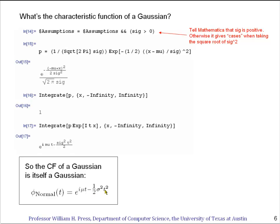So you see the characteristic function basically takes the standard deviation that was in the denominator, or I should say the variance, the square of the standard deviation, and moves it to the numerator.